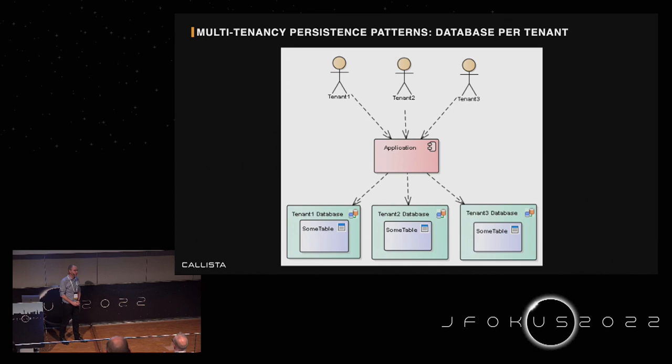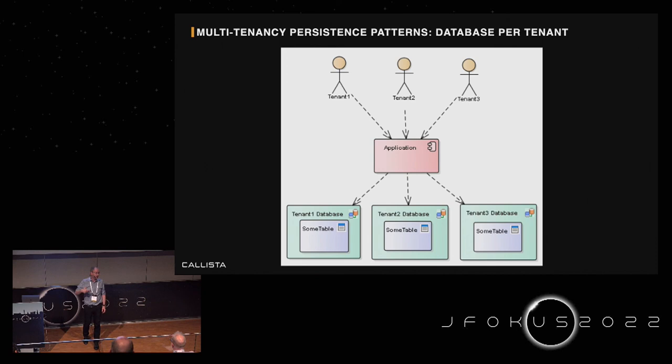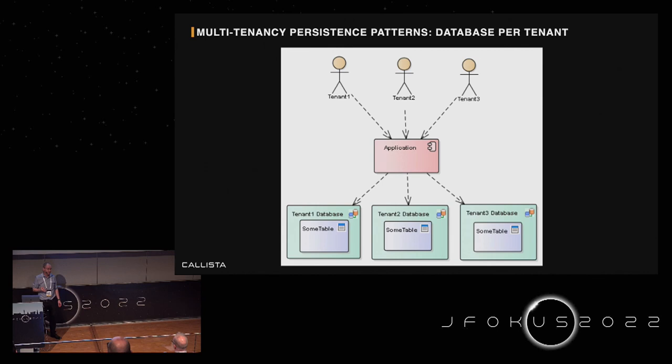The first option is to not share any resources on the data layer at all — a separate database per tenant, including a full copy of all the tables in the data model, replicated throughout all tenants. This of course creates a headache of keeping that data model consistent, and when it evolves it needs to be fixed on each and every tenant database. On the application layer the challenge is maintaining multiple data sources and picking the right connection for the right tenant.